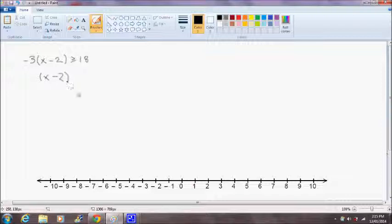So this becomes x minus 2 in brackets is less than or equal to negative 18 divided by 3, and we can rewrite that as x minus 2 is less than or equal to negative 6.